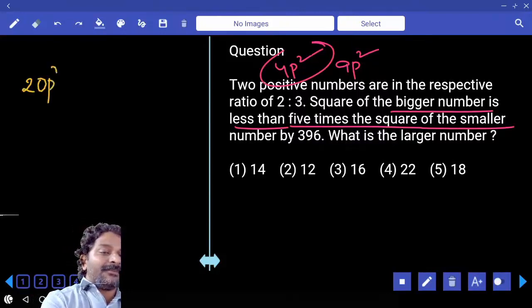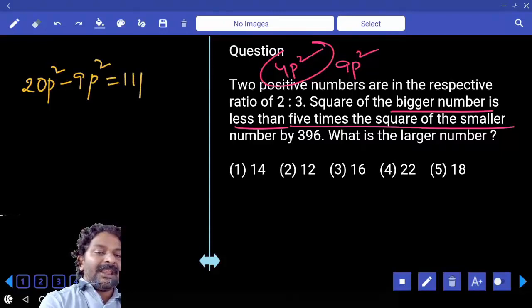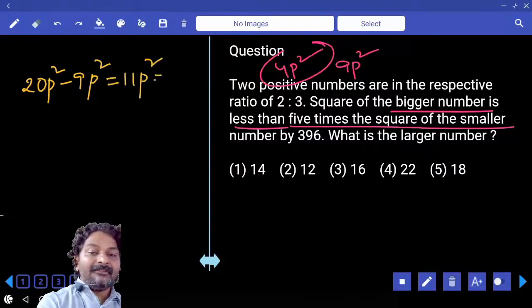20p². And from this if you subtract 9p², you will get 11p². And which is equal to 396.